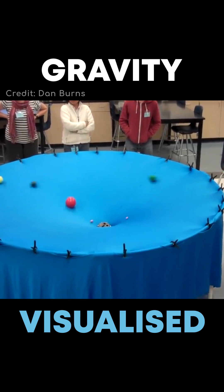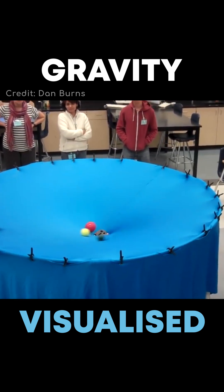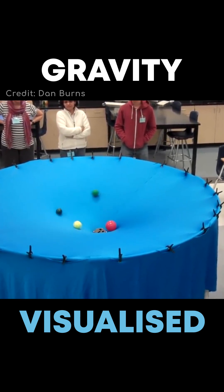But why do objects in our solar system only orbit in one direction? Check out the pinned comment for more.